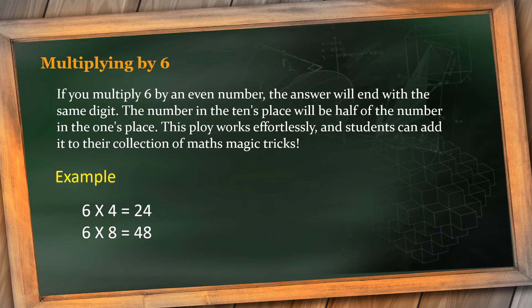Now 6 multiplied by 4 is 24. When you multiply 6 with any even number, so here the even number is 4, the number 4 will always come in the unit place of the answer, and what is half of 4? It's 2, so 2 will be in the tens place. Similarly, 6 multiplied by 8 equals 48. Eight is in the units place and half of 8, which is 4, is in the tens place. Any even number multiplied by 6, that particular even number will be in the unit place and its half will be in the tens place. Isn't it easy?